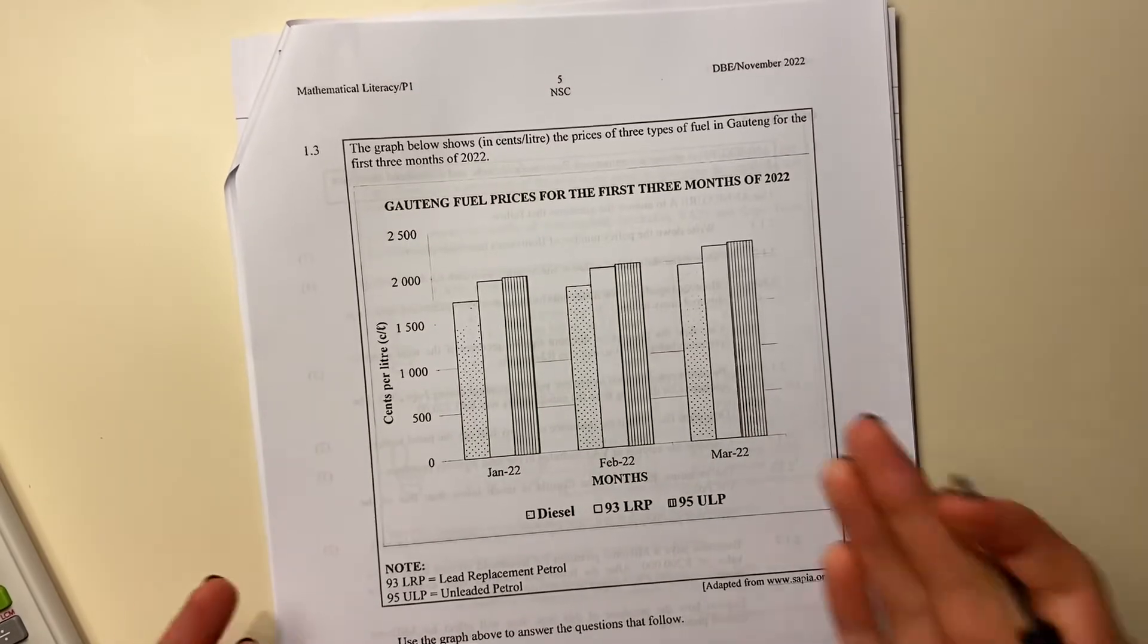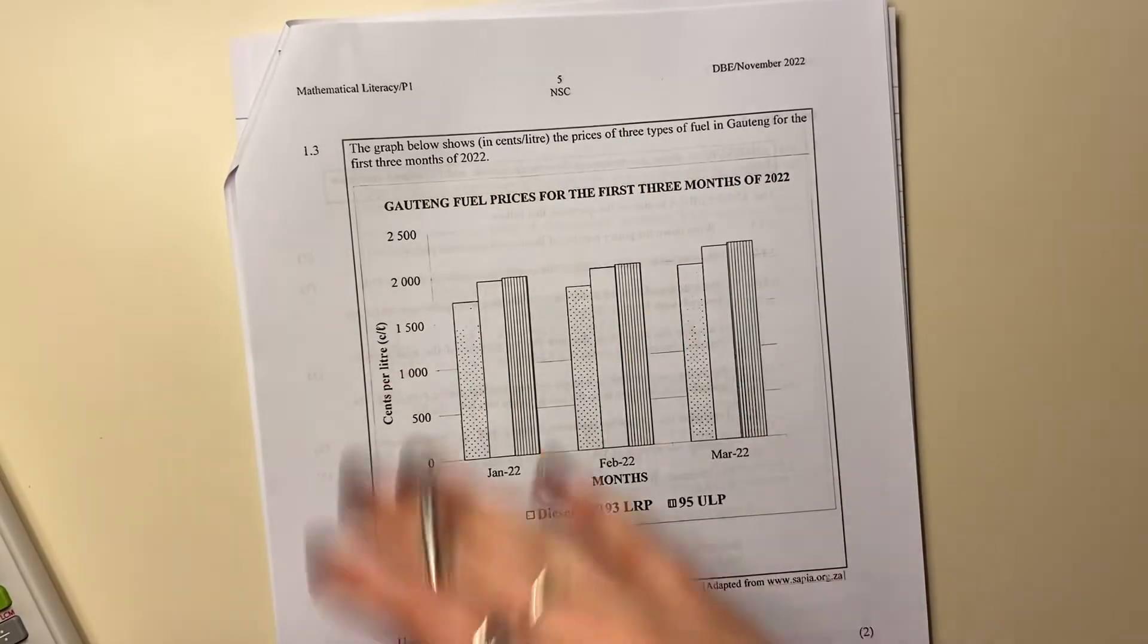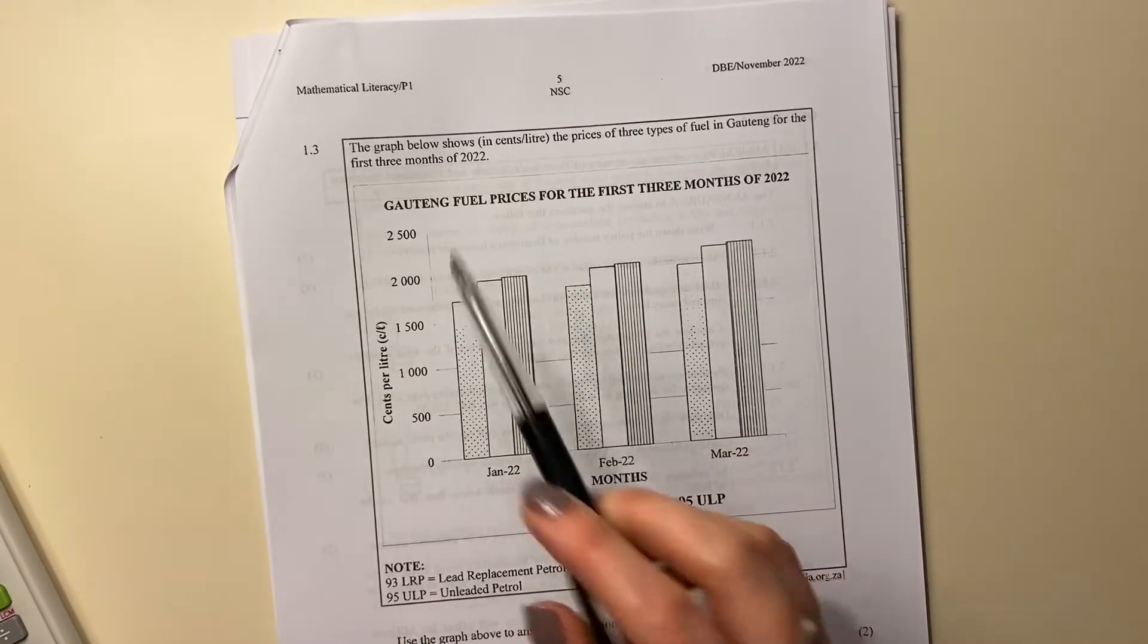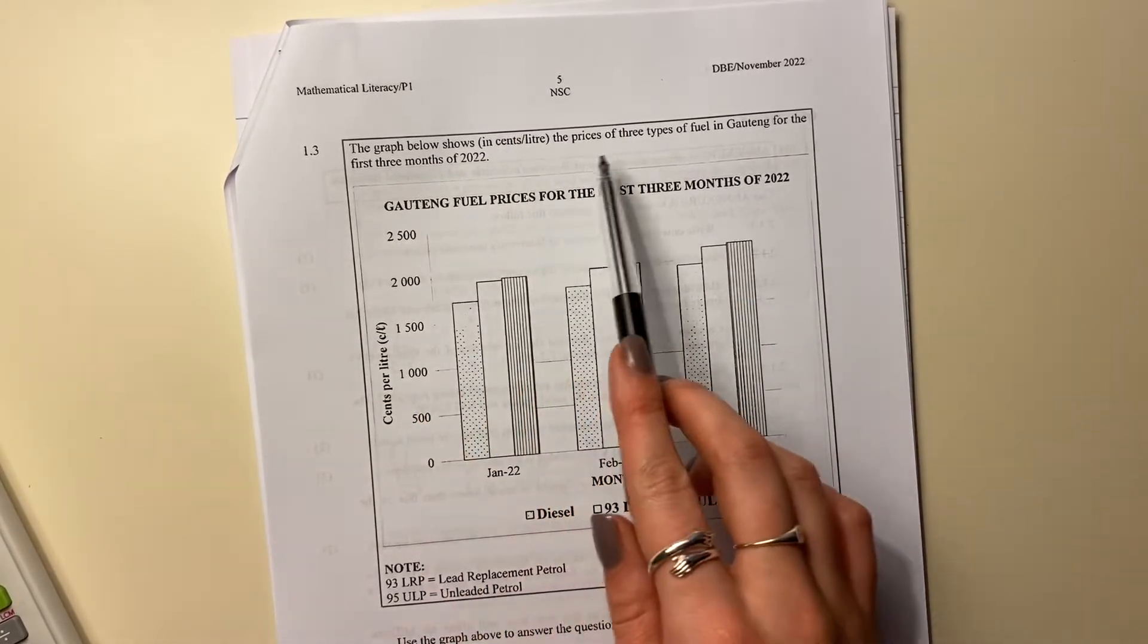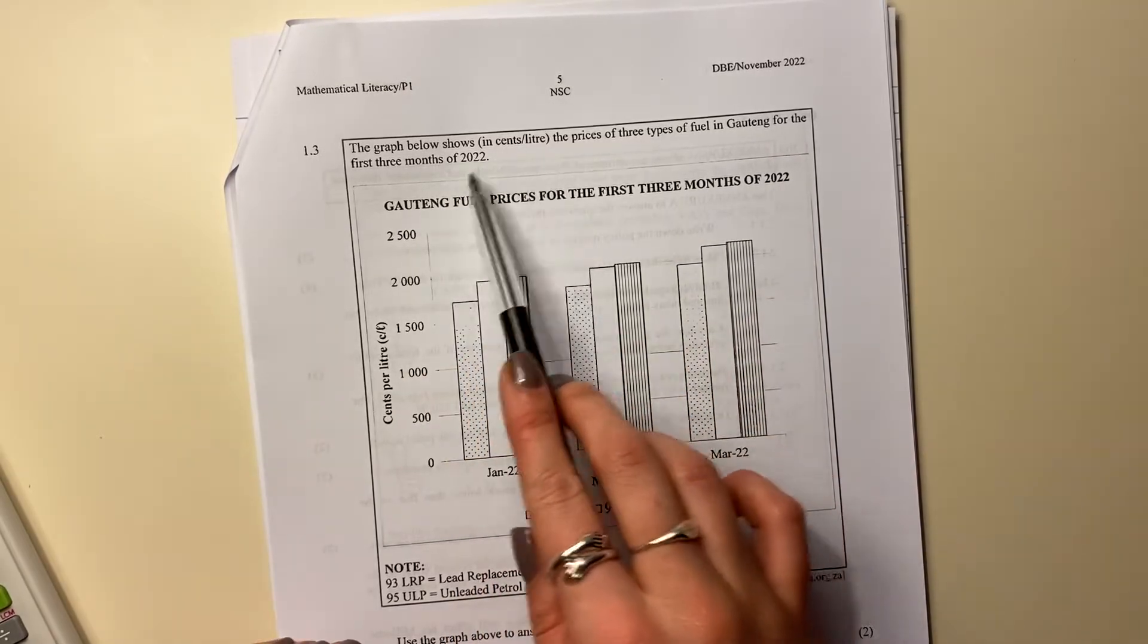Okay, let's move into the next question. It's quite a short one, but it's important that we understand and are able to actually read through these questions. So it says, the graph below shows the prices of three types of fuel in Gauteng for the first three months of 2022.